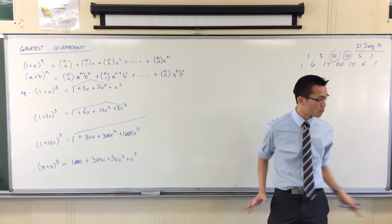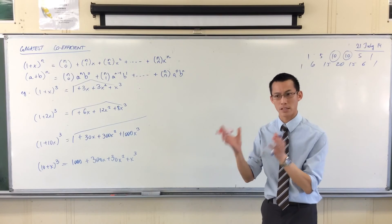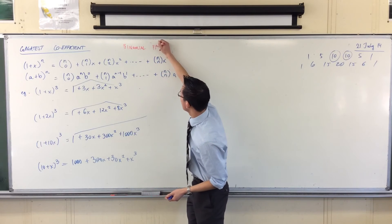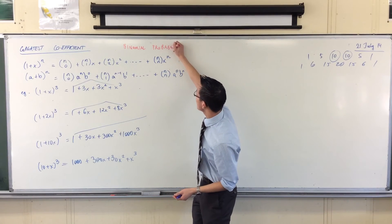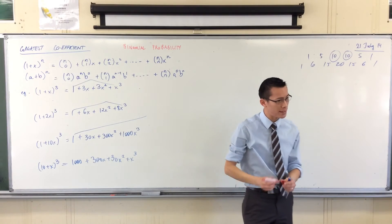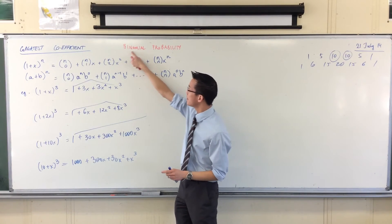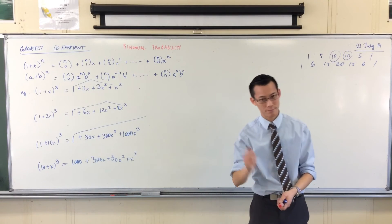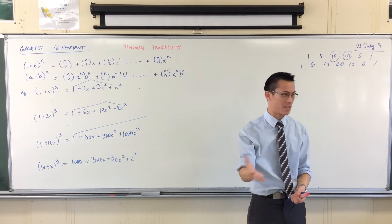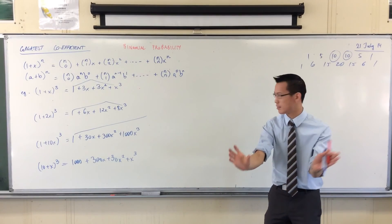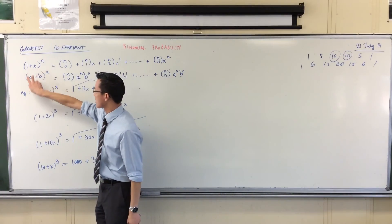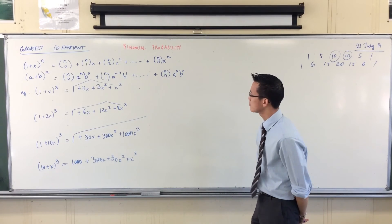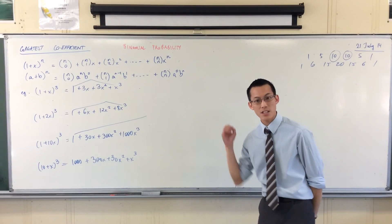Just to provide one more justification for why we're doing this, we're in binomial theorem right now. After the trials, one of the most important topics is probability. The hardest part of probability is binomial probability. It's directly feeding out of this. Binomial probability means the probability of two things. When you've got two choices, for example, heads and tails, or if you're rolling a dice, maybe evens and odds. Everywhere you've got two choices. These two things in here, the one and the x, or the a and the b, if they were probabilities...